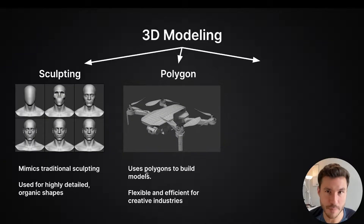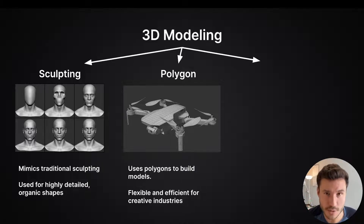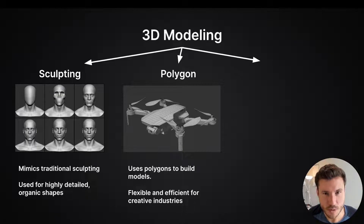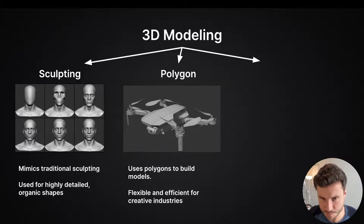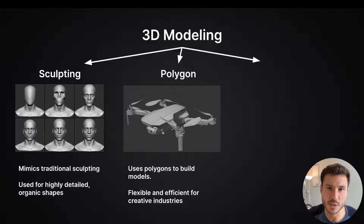What most of you are familiar with is polygon modeling, because usually most people start with polygons in Blender or Cinema 4D. In polygon modeling, we use polygons to build models. It's very flexible and efficient for creative industries — especially with subdivision modeling and quads — because we can deform these objects, texture them very easily, unwrap everything easily. It's mostly used in creative visual industries.